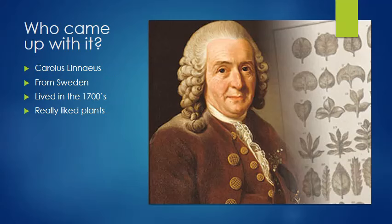The person that came up with the system of classification that we have now, his name was Carolus Linnaeus. He was from Sweden, he lived in the 1700s, and he was a botanist. He really liked plants. He came up with a system that was so good that everyone was like, 'Yep, we're going to use that system.'